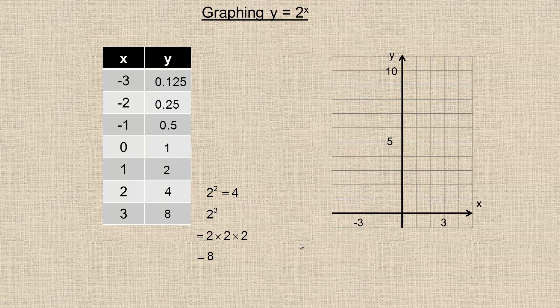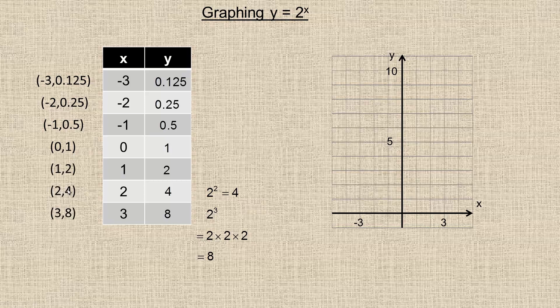Now, I was going to talk about the big numbers, but we'll finish the graph here. So we've got these ordered pairs. So this would be negative 3, 0.125. This would be negative 2, 0.25, negative 1, 0.5, 0, 1, 1, 2, 2, 4, and 3, 8. So that's the ordered pairs we're going to graph.